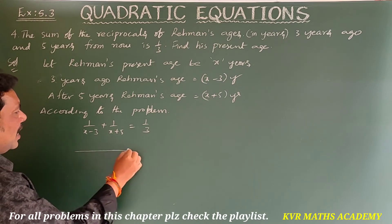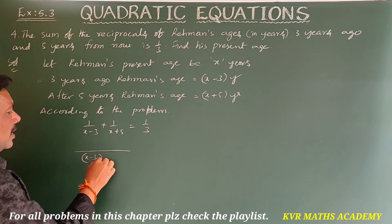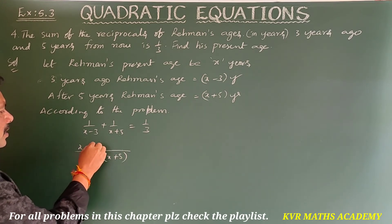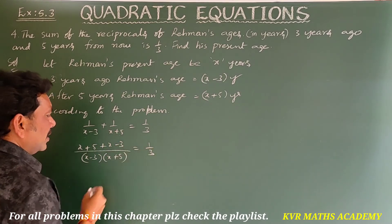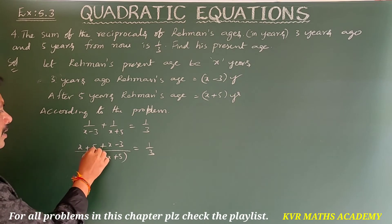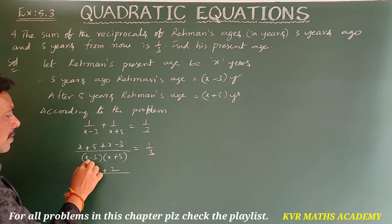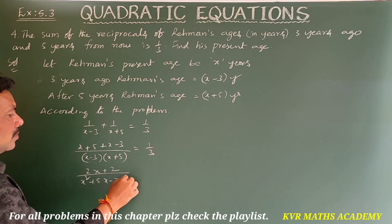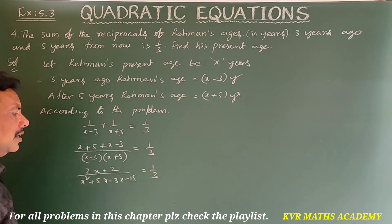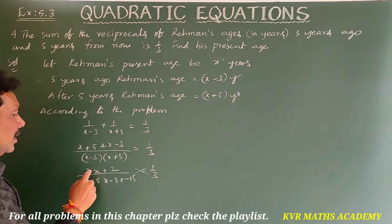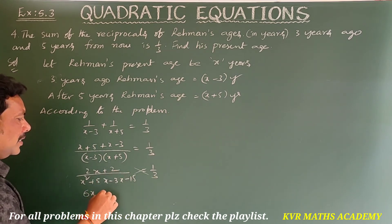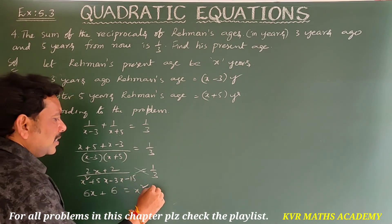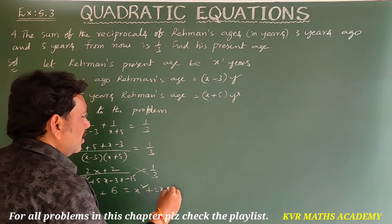Taking LCM as (x minus 3)(x plus 5): (x plus 5) plus (x minus 3) over (x minus 3)(x plus 5) equals 1/3. The numerator simplifies to 2x plus 2, and the denominator expands to x squared plus 5x minus 3x minus 15, giving x squared plus 2x minus 15. Cross multiplying: 3(2x plus 2) equals x squared plus 2x minus 15, so 6x plus 6 equals x squared plus 2x minus 15.